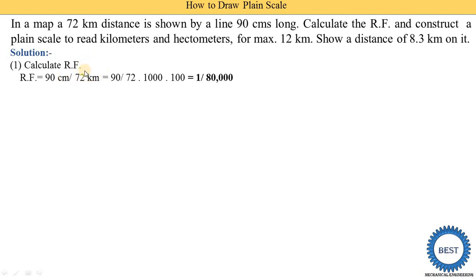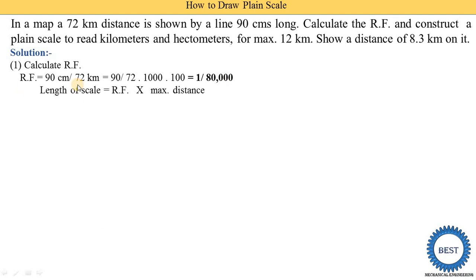In one kilometer there are 1000 meters, so 72 is multiplied by 1000. One meter equals 100 centimeters, so we multiply again by 100. This gives us RF = 1/80,000. Now we find the length of scale: RF multiplied by maximum distance.